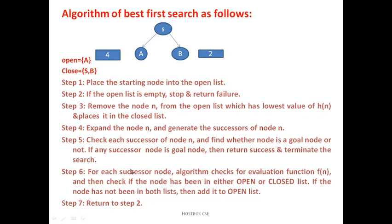Step 5: Check each successor of node N and find whether node is a goal node or not. If successor node is goal node, then return success and terminate the search. So remember, suppose you are keep on searching the node - level 0, level 1, level 2. Suppose you are getting C, D, and D is your goal node. You can stop the process. You achieved a goal node, you can stop the process and terminate it. If not, then continue further.